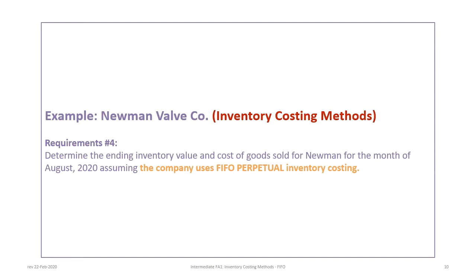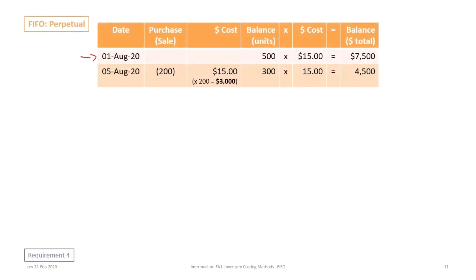Now for requirement 4: ending inventory and cost of goods sold using the FIFO perpetual costing approach. We begin with beginning inventory of 500 units at $15 for a total of $7,500. Our next transaction is a sale of 200 units at $15, leaving us with 300 units at $15 for a total of $4,500.